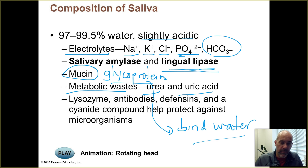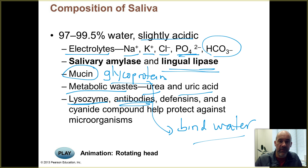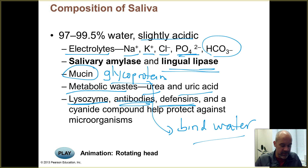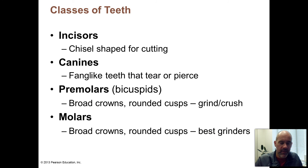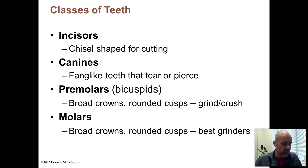There are things in saliva that help combat microorganisms. Lysozyme is an enzyme that attacks bacteria. Antibodies made by your adaptive immune system attach to very specific types of microorganisms or foreign substances, and you have some of those in your saliva. Defensins are proteins that kill some types of bacteria. There's even a cyanide-based compound in your saliva that helps control the numbers of microorganisms in your mouth and keeps those populations from getting out of control.